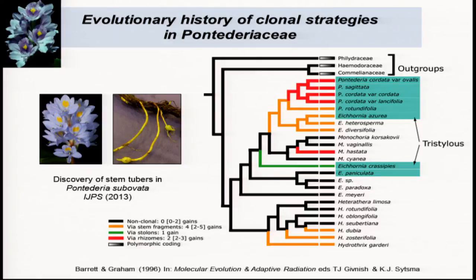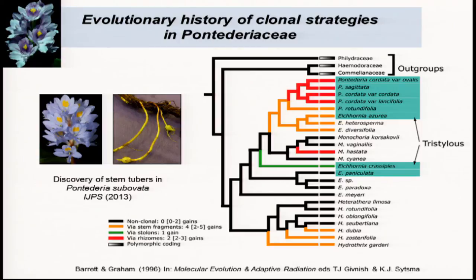This trait of clonal propagation is actually quite evolutionarily labile. A phylogeny from my laboratory on a relatively small group of flowering plants in the Pontederiaceae — a family of 20 or 30 species — shows at least four different clonal strategies within this family. We've recently discovered a new strategy in the Pantanal of Brazil where one species has evolved stem tubers. Different kinds of organs of clonal growth can be quite varied, with no strong constraints on evolving different strategies among closely related species.